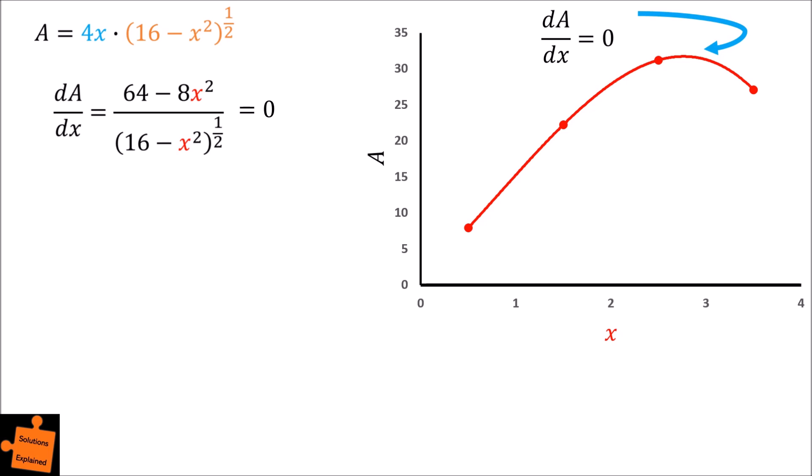Firstly, multiply up by the denominator to obtain 64 minus 8x squared is equal to 0. Take the 8x squared to the other side, and then divide by 8 to obtain that 8 is equal to x squared.